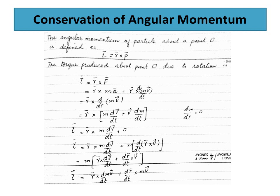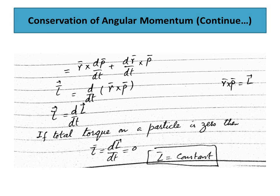This gives us r cross d/dt of Mv plus dr/dt cross Mv. Since Mv is linear momentum P, substituting P into the equation gives r cross dP/dt plus dr/dt cross P. The left side is the derivative of r cross P, which is dL/dt. And r cross dP/dt is the torque tau. So dL/dt equals tau. If total torque is zero — the second condition of equilibrium — then dL/dt equals zero.